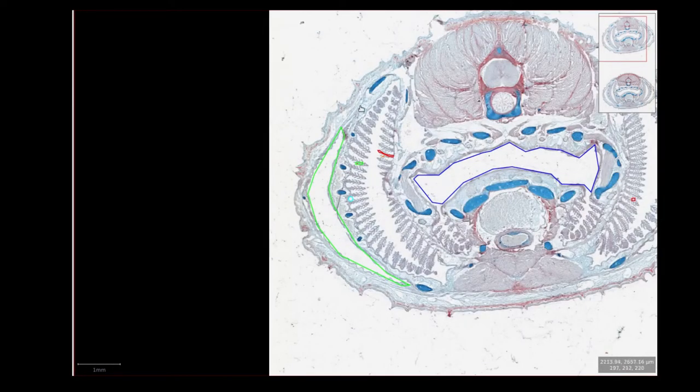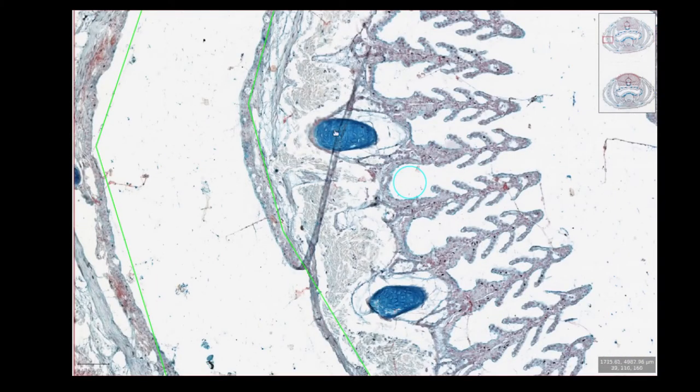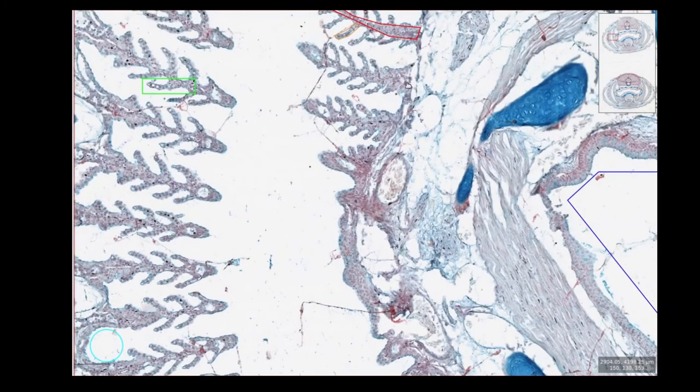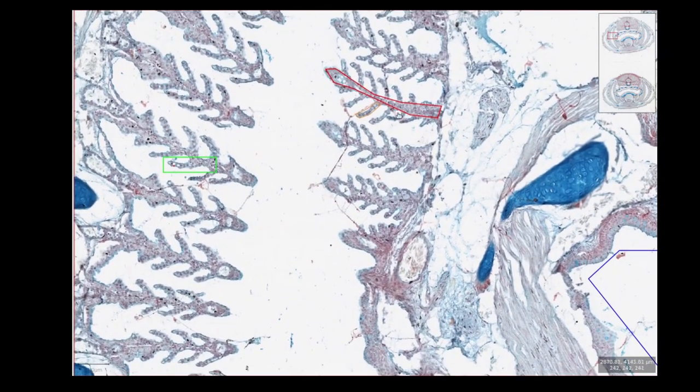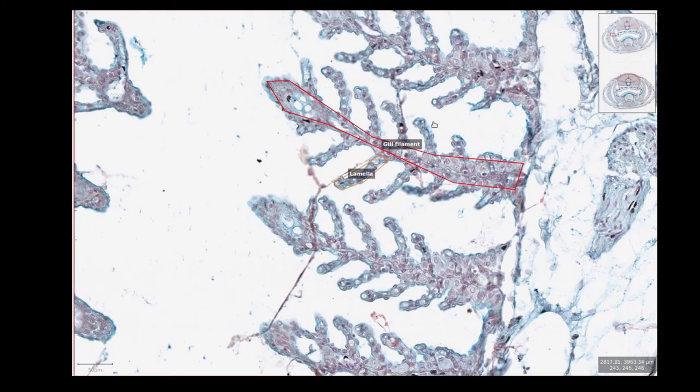Here we have the interbranchial septum of two gill arches supported by more segments of cartilage. These are called the branchial rays. Lining the interbranchial septum is a hemibranch made up of a collection of finger-like extensions called gill filaments. These are separated by septal channels.